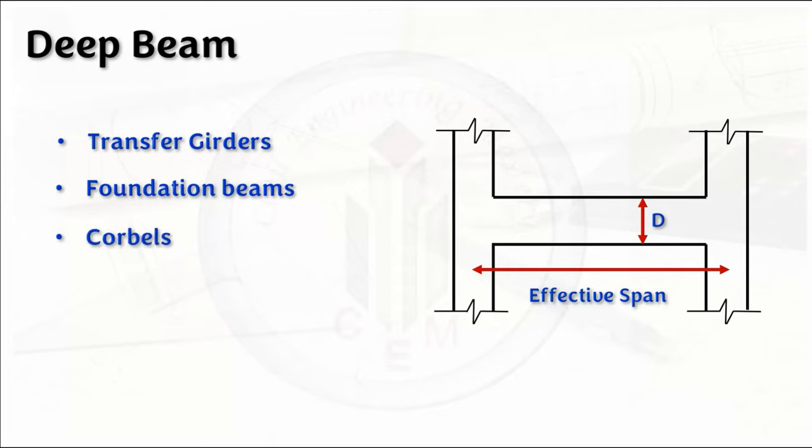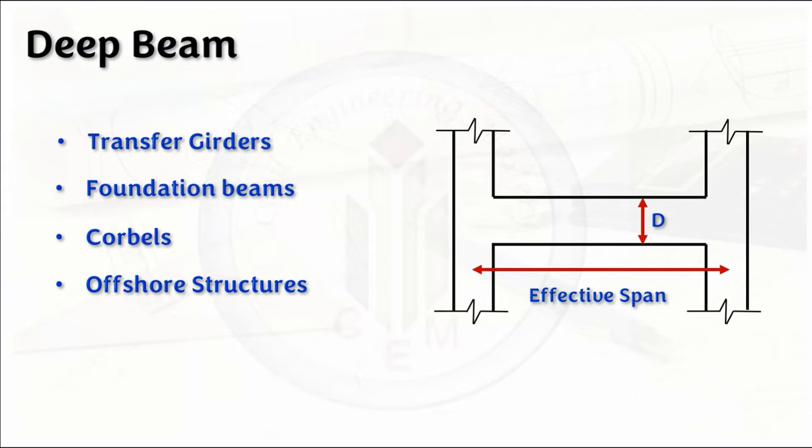Next are foundation beams. Deep foundation beams are used in areas with poor soil conditions. Next are corbels — beams that project from a wall to support a load. Deep corbels are often used in buildings to support balconies and overhangs. The last application is offshore structures, where deep beams are used in structures such as oil platforms and drilling rigs.